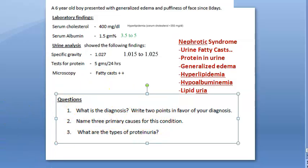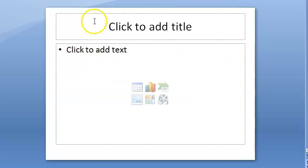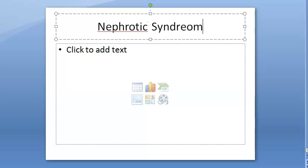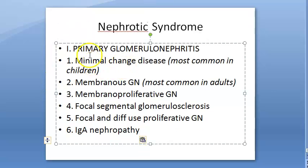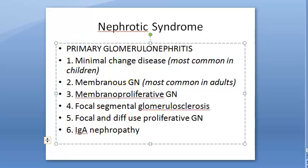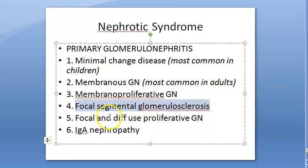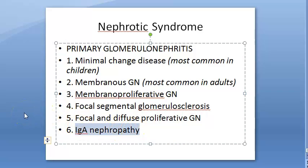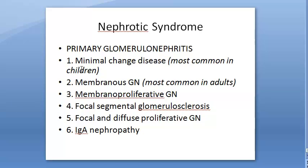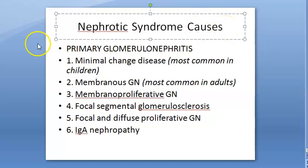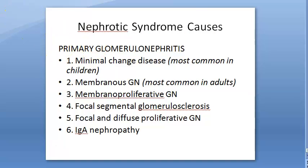What are the causes for nephrotic syndrome? The causes can be glomerular nephritis, including minimal change disease, membranous glomerulonephritis, membranoproliferative glomerulonephritis, focal segmental glomerulosclerosis, focal and diffuse proliferative glomerulonephritis, and IgA nephropathy. All the glomerular nephrons are affected. This is one set of causes.